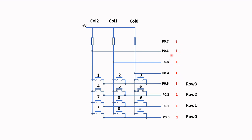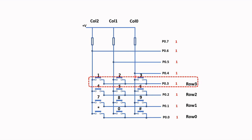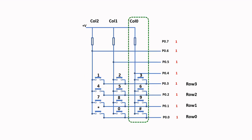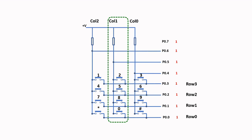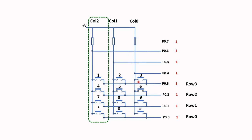By default all pins are set to logic 1. We will focus on Row 3 for this part of the video and discuss Row 2, Row 1, and Row 0 later. We need to scan Row 3 and then scan Column 0, Column 1, and Column 2 to check if any of those three keys has been pressed.